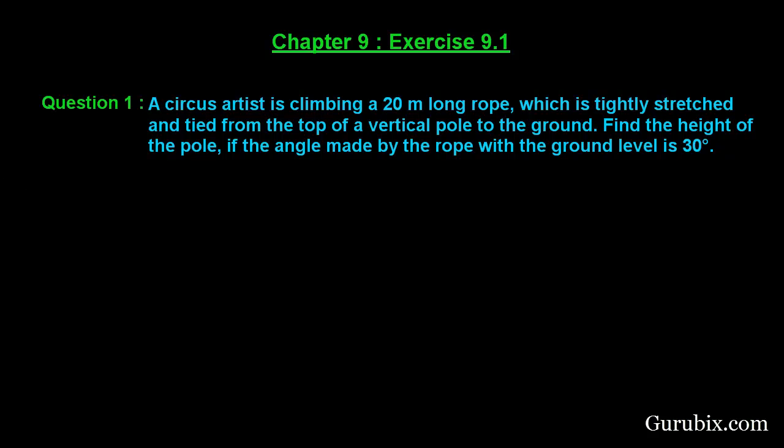So let us see how to solve this question. Suppose this is the ground and this is the pole. The pole is vertically standing, therefore it makes a 90 degree angle with the ground and this is the rope. This rope makes a 30 degree angle with the ground.